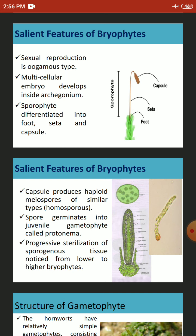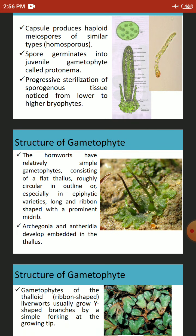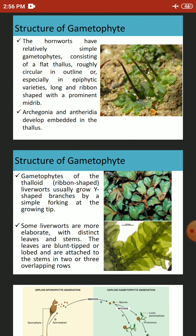The gametophyte is the dominant phase in the life cycle and has two basic forms: the prostrate form and the erect form. The lower groups, like hornworts and liverworts, have a relatively simple gametophyte consisting of a flat thallus. The thallus is ribbon-shaped, and some liverworts are more elaborate with distinct leaves and stem. The leaves are blunt-tipped or lobed and are attached to the stems in two or three overlapping rows.